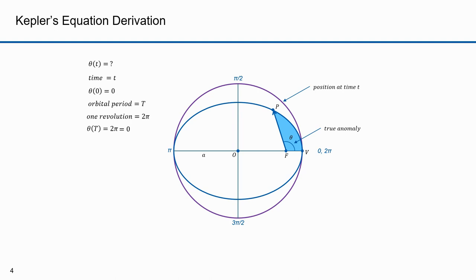Kepler started by first determining a formula for this blue area defined by the points P, F, and V. If we drop a vertical line segment down from point P, the position of our planet, it intersects at point S. If we project that line upward, it intersects with the circle at point Q. A line segment from the origin to Q forms the angle E. We refer to this angle as the eccentric anomaly. The eccentric anomaly forms a segment of the circle defined by points Q, O, B. Computing the area of this segment is easy.